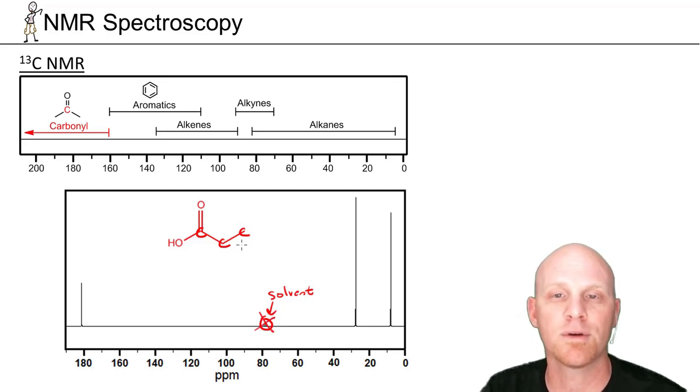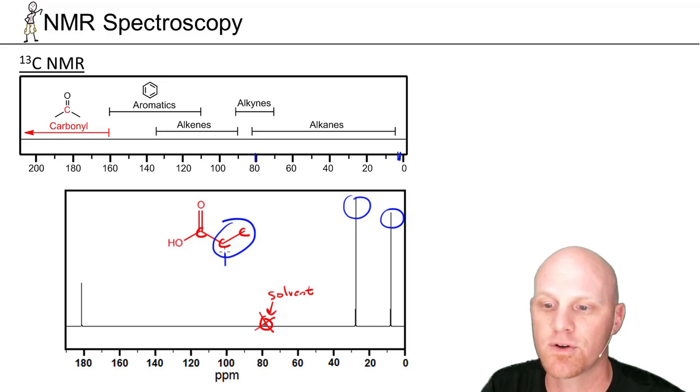So in this case propionic acid three carbons, they're all unique, so three signals. The two on the right here are in the alkane region of the spectrum from like zero to 80-ish. So those are these two signals down here, and this carbon right here that's closer to the oxygen—I'll label these carbons one and two, it's not how you number them in naming—but in this case that would be number two and that would be number one. We'll find out that the proximity to electronegative atoms like oxygen cause signals to show up more downfield, more towards the left on the spectrum.